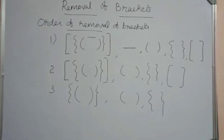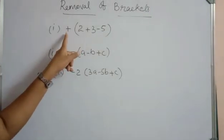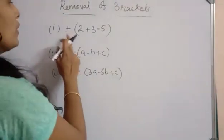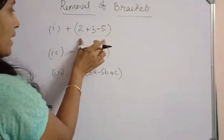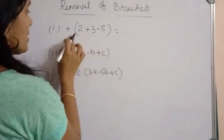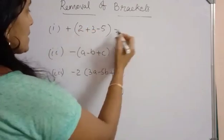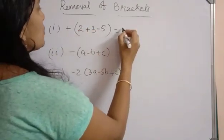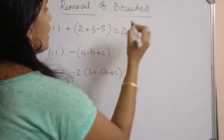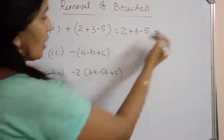Let's see an example. Here in this question, there is a plus sign before the bracket. As I mentioned, when you remove this bracket, the terms remain as they are — there is no change of signs. That is, 2 plus 3 minus 5 stays as it is. Then you simplify and find the answer: 5 minus 5 equals 0.